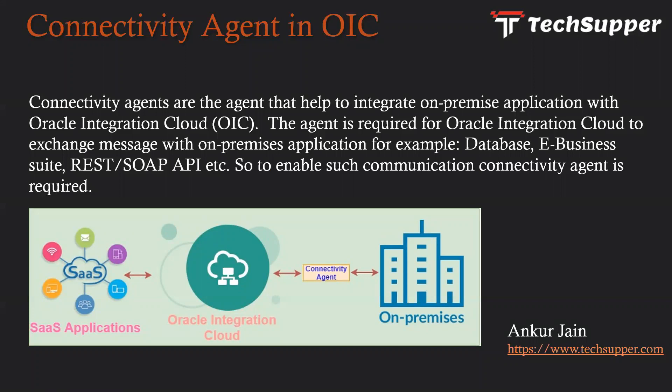To take another example: you may have some legacy application which is up and running on-premise and which is not accessible over the internet. Since Oracle Integration Cloud is on a public network, the public network cannot identify the internal network. So there might be a requirement that you need to communicate with that on-premise application via Oracle Integration Cloud, but OIC cannot directly communicate with the on-premise application because both are on different networks. So in order to enable such communication, an agent is required, which is called the connectivity agent or OIC agent.